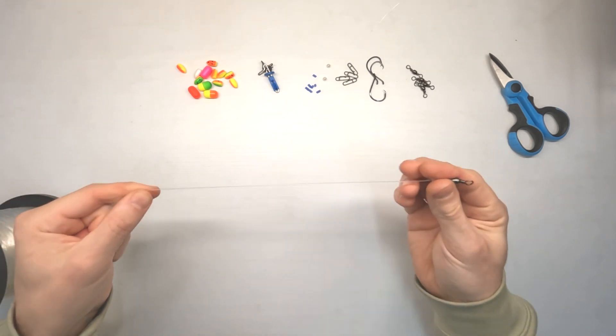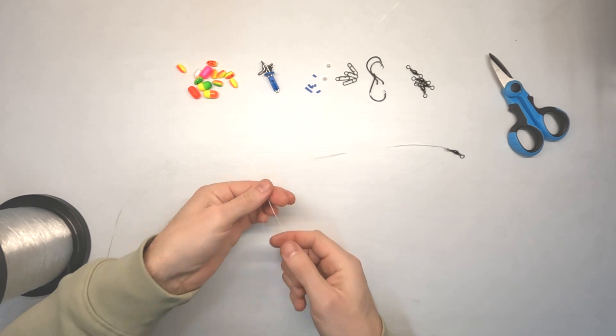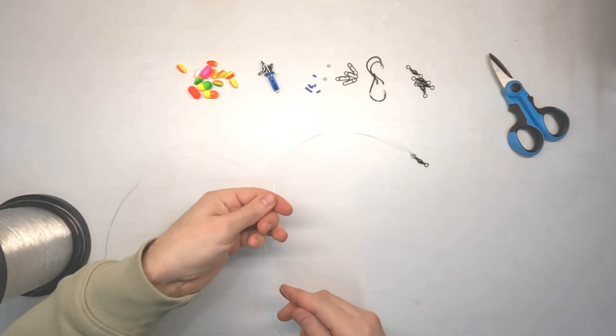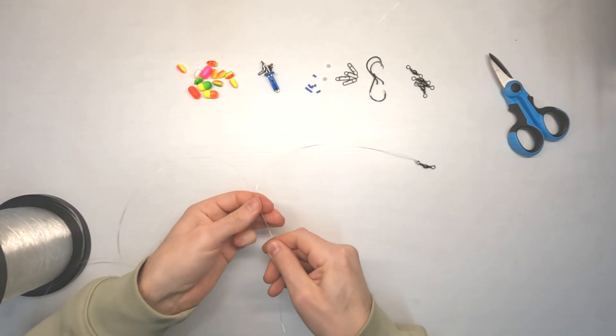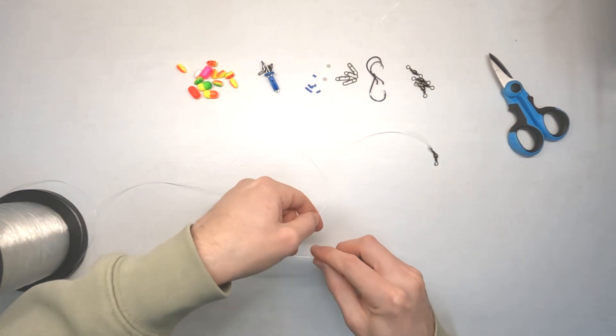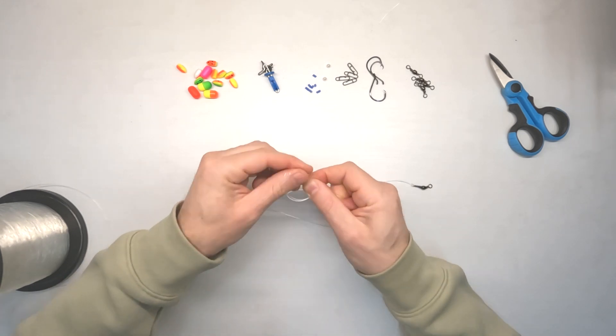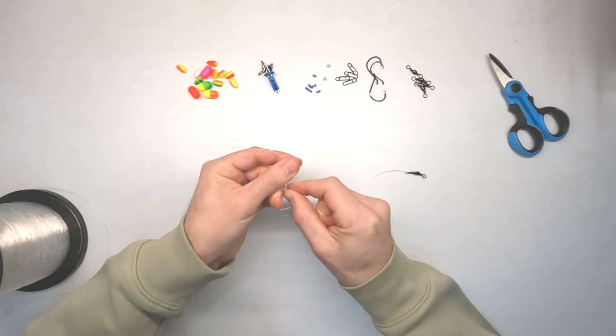So tight on our swivel, and then we come down about 150 or 200 and then we're just going to create a loop like so. With that loop create another loop and then we're going to go through that three times.